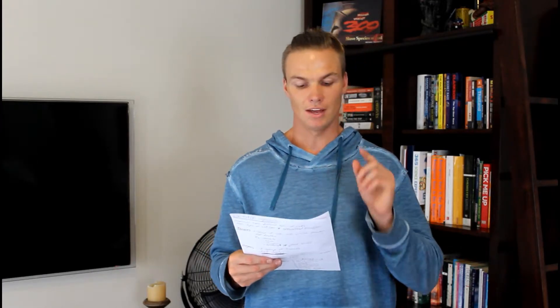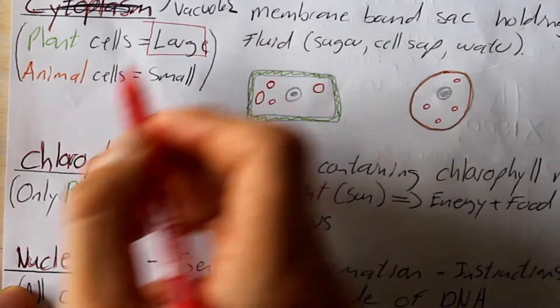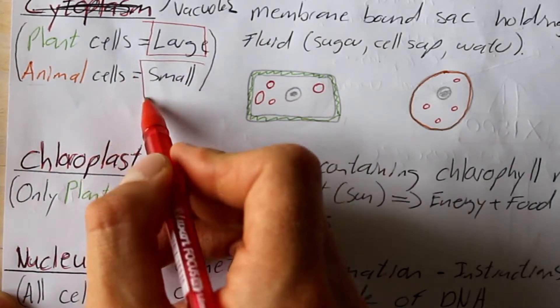You've probably seen on some pictures of cells small little circles — little organelles. These are vacuoles. They are small membrane-bound sacs, and they hold fluids. For example, there can be sugar, cell sap, or water in these vacuoles. It's important to note that plant cells have larger vacuoles, whereas animal cells have smaller vacuoles.